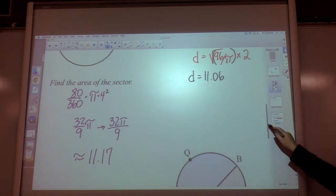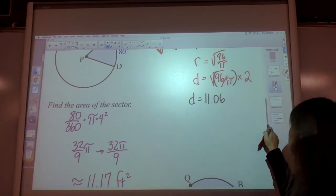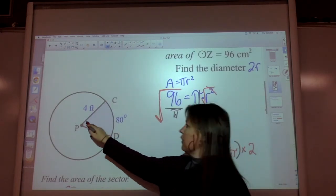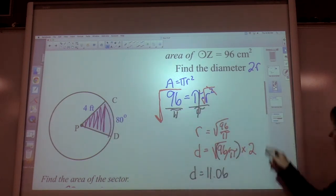That is the area of the sector. If we're throwing a label on it, it would be in square feet. So this is taking up 11.17 square feet of your circular garden that you're building.